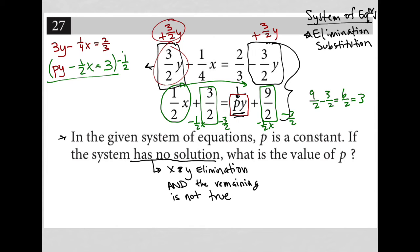Because if I multiply by negative one half, my X term will become a positive one fourth, which allows it to cross out with my negative one fourth. So my new second equation would say negative one half PY plus one fourth X equals negative three halves. That allows me to cross out my one fourth X.